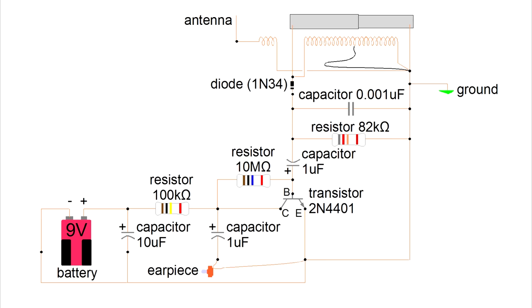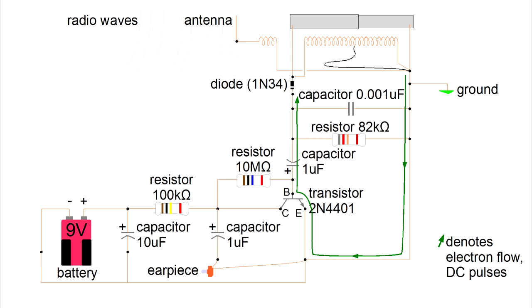I'll tell you a little bit about how the amplification works. The weak electrical pulses powered by the radio waves flow through this part of the circuit. Whenever a pulse passes from the emitter to the base of the transistor, that allows a much stronger pulse to flow from the emitter to the collector of the transistor. The strength of this pulse comes from the battery.